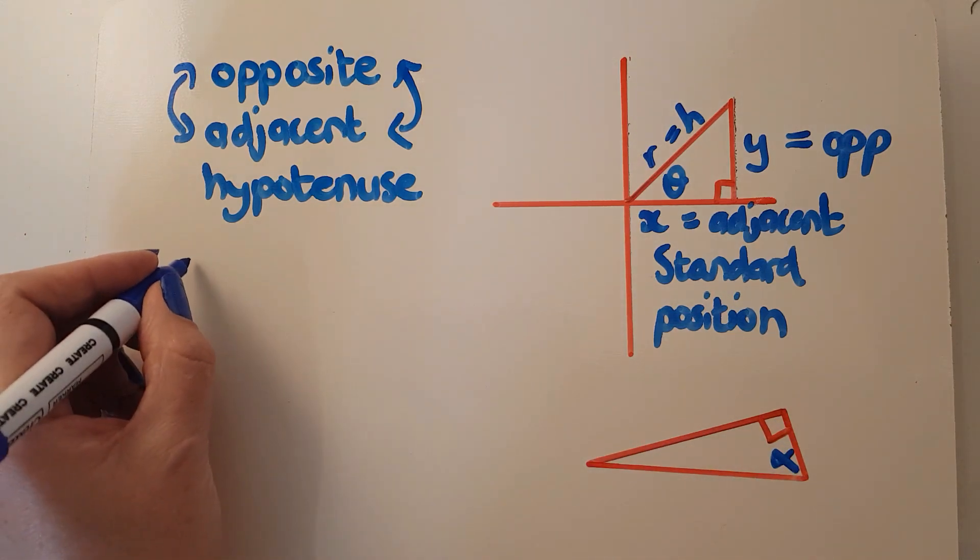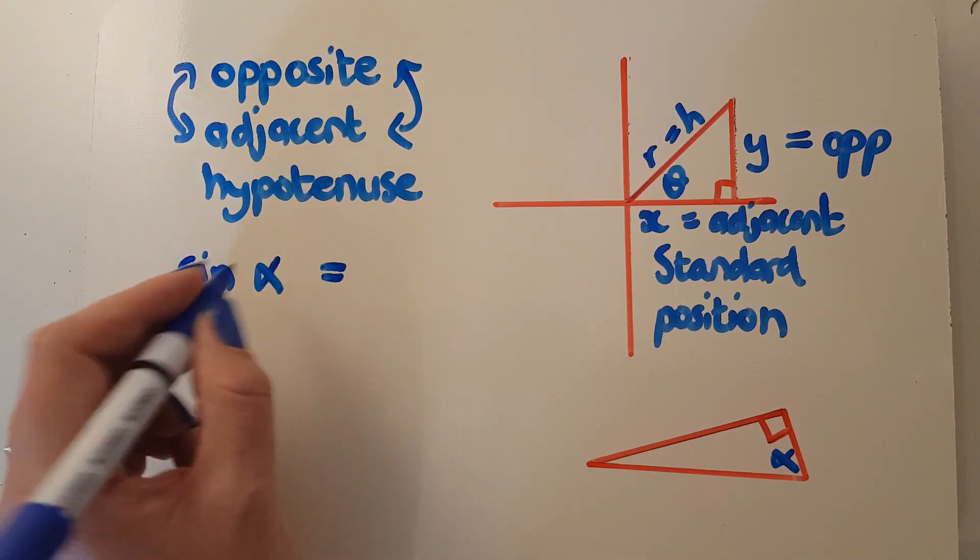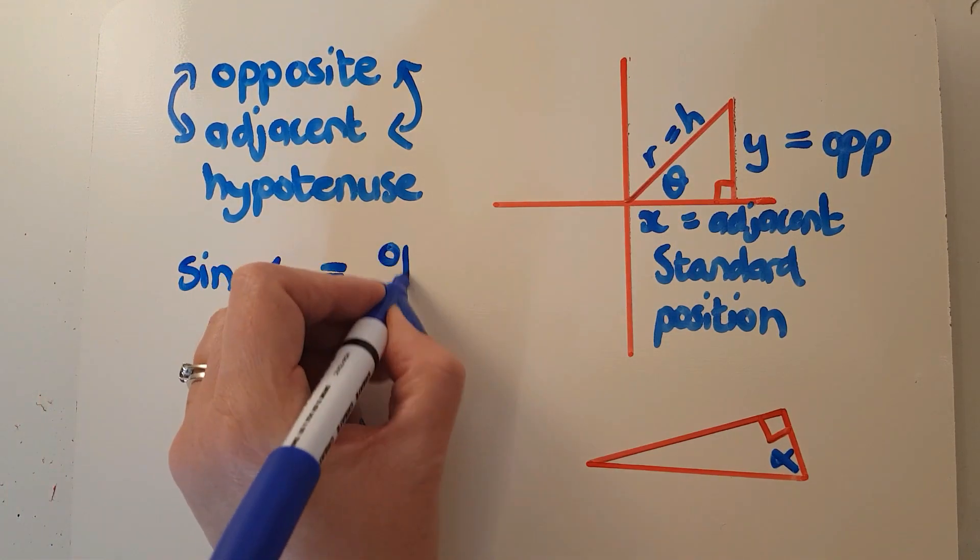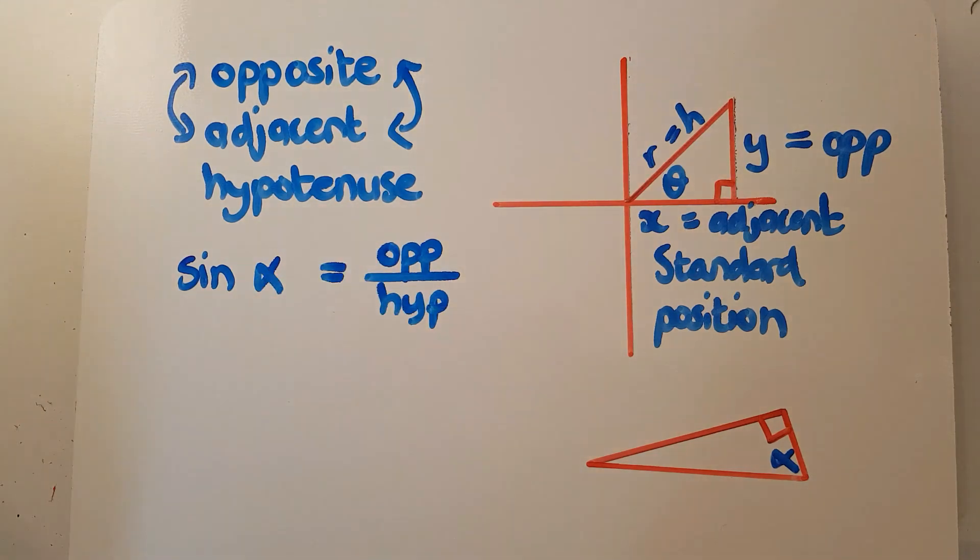The way that it works here is that your sin of alpha in this case would be y over r in this diagram, but in this one, it's opposite over hypotenuse. And there's some nice rhymes to remember these guys as well.